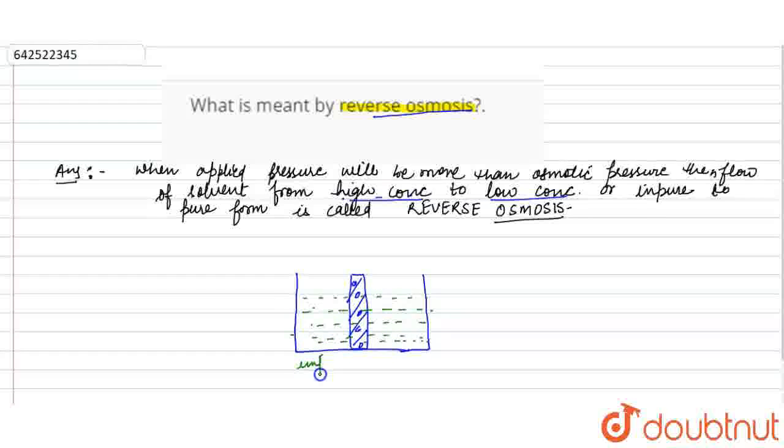This is impure form and this is pure form. Here high pressure is applied. This is high concentration to low concentration, and it is semi-permeable membrane.